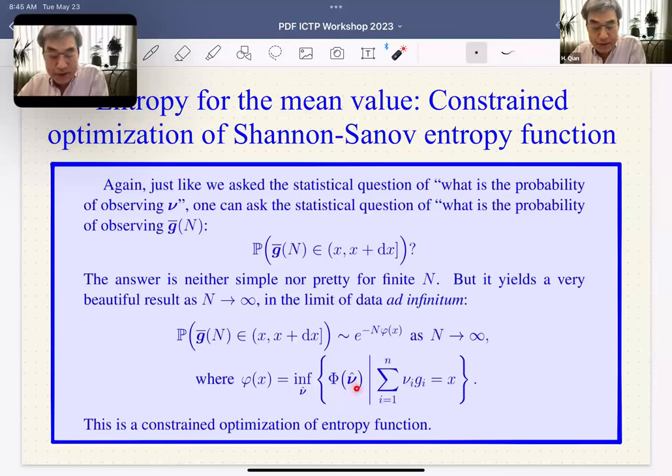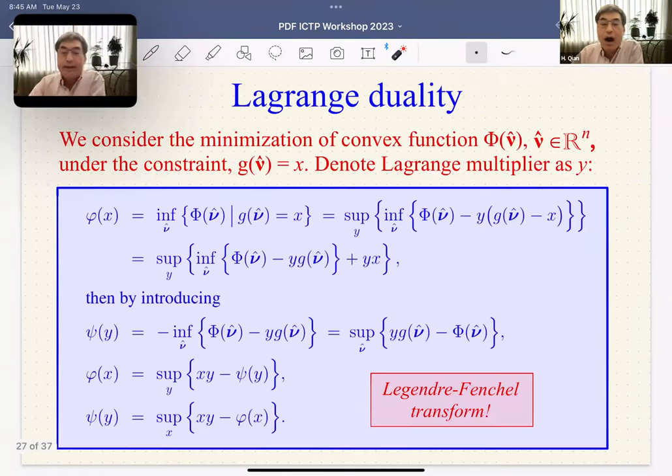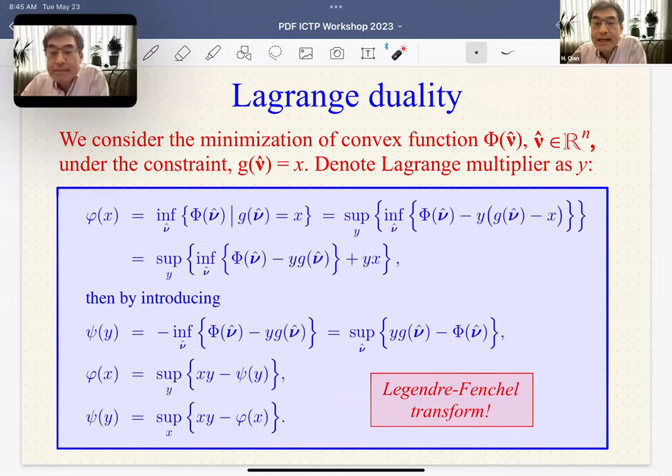Large deviation theory says it has an asymptotic expression with N and a convergence rate function. This rate function, by the principle of maximum entropy, is a constrained optimization of the KL divergence. The constraint is frequency times the random variable gives the empirical mean value. We only look at nu satisfying this constraint and find the greatest entropy.